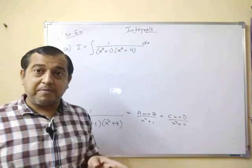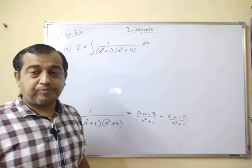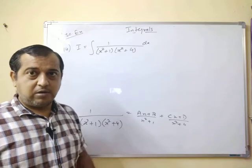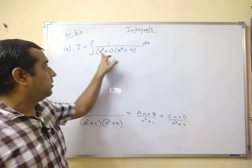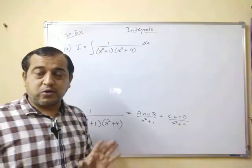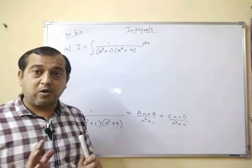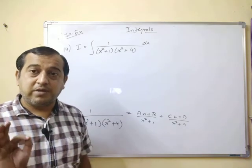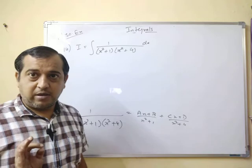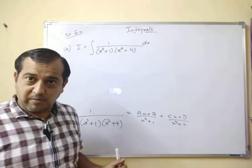Another method which can be applicable in this problem, not in case of all, can be applicable in this problem. Here you can see in both the brackets, you are having x square and you are not having a term of x at all, means x with power 1. There is no term at all.